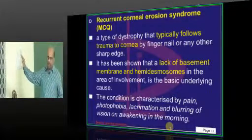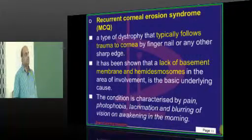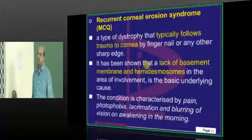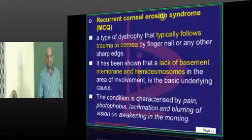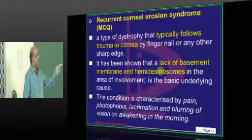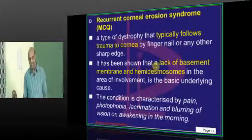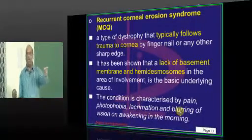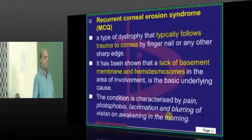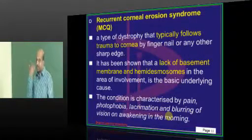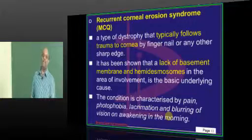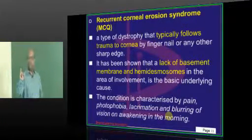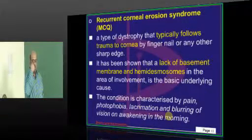Recurrent corneal erosion syndrome: whenever there is frequent trauma to the cornea by a fingernail or sharp edge, these people develop corneal erosions. The underlying problem is lack of basement membrane and hemidesmosomes. They will have pain, photophobia, lacrimation, and blurring of vision on awakening in the morning. Hemidesmosmal absence commonly follows trauma to the cornea.